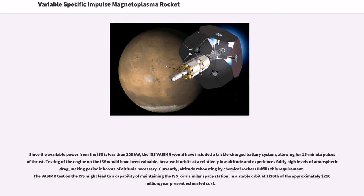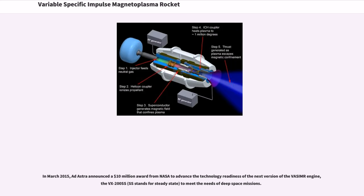Since the available power from the ISS is less than 200 kW, the ISS VASIMR would have included a trickle-charged battery system, allowing for 15-minute pulses of thrust. Testing of the engine on the ISS would have been valuable because it orbits at a relatively low altitude and experiences fairly high levels of atmospheric drag, making periodic boosts of altitude necessary. Currently, altitude reboosting by chemical rockets fulfills this requirement. The VASIMR test on the ISS might lead to a capability of maintaining the ISS, or a similar space station, in a stable orbit at 1/20th of the approximately $210 million per year present estimated cost.